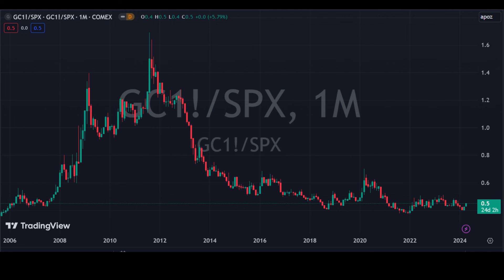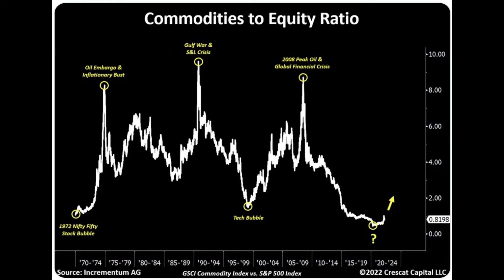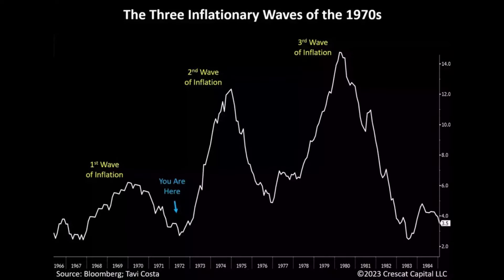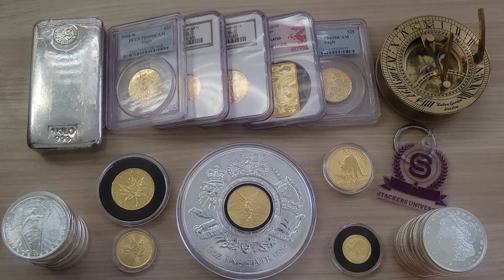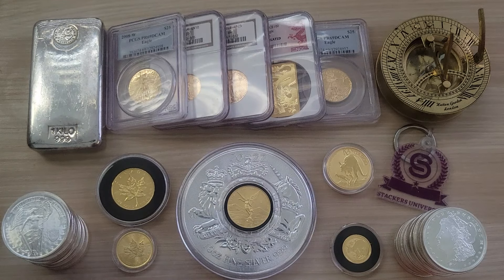It doesn't matter if we're talking about ratios between gold and the stock market, commodities versus financial assets, inflation, money printing, or the impact of the real estate and business cycles on money rotation — it all points to metals going higher. And let's not forget some even more asymmetrical bets exist within the precious metals.